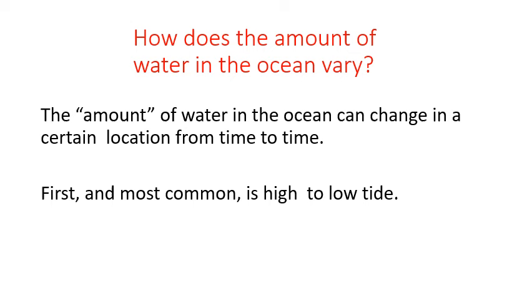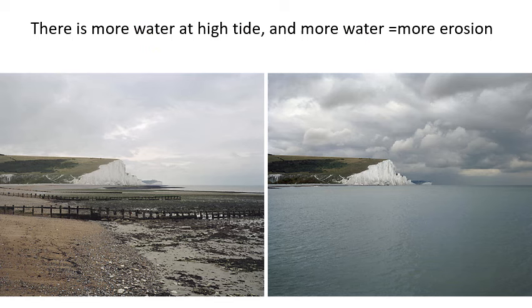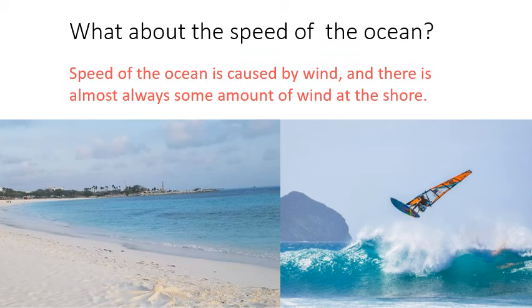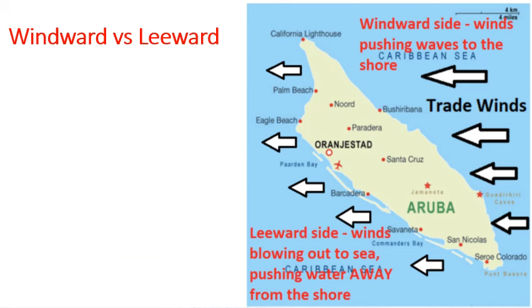If you think about high tide versus low tide at one particular spot, at one time there's less water and another time there's more. So you'll get more erosion when there's more water. The speed of the ocean is primarily caused by waves, which are driven by wind — and there's generally at least some wind at the shore. So the ocean water is going to be moved to some speed by the wind that's almost always there. One side of an island can have more or less wind — that's the windward side versus the leeward side.